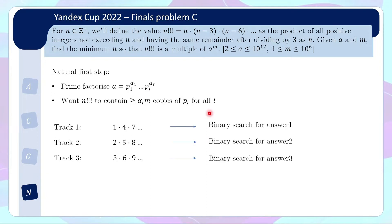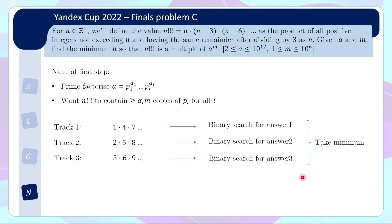This gives a very natural idea: for track 1, you can binary search to find a suitable value of n. Then for track 2 you also binary search to find the minimum possible value of n, and for track 3 you binary search as well. Then you take the minimum across all three tracks. This is a very common idea — as you increase the candidate answer it becomes more and more likely to satisfy the condition, so you binary search for the answer to get a log-factor asymptotic timing.